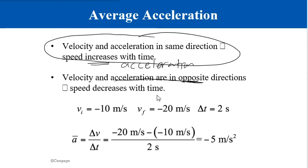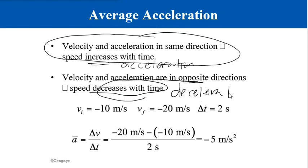For example, if you are moving toward your garage and decreasing your speed, you could refer to this as deceleration. In this case the direction of acceleration is negative. To summarize: when velocity and acceleration are in the same direction, the speed of the object increases with time; when velocity and acceleration are in opposite directions, the speed of the object decreases with time.